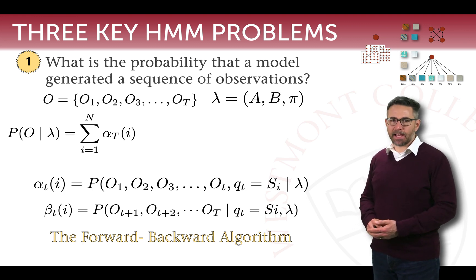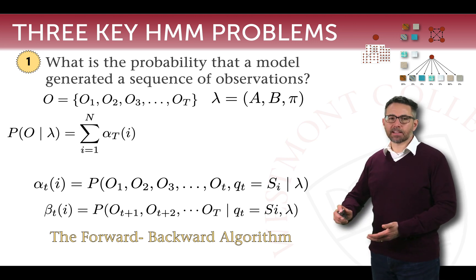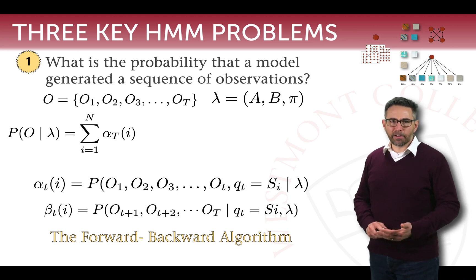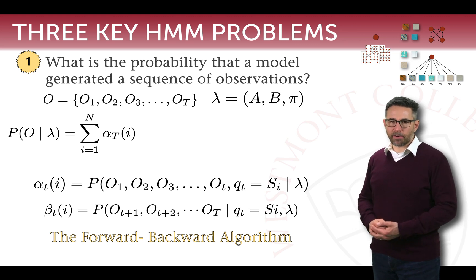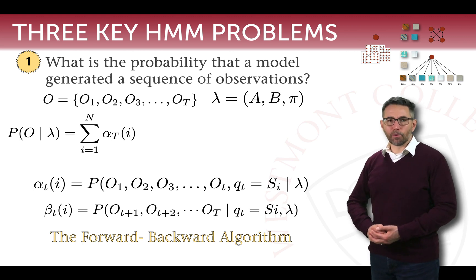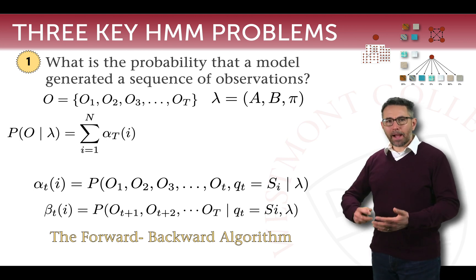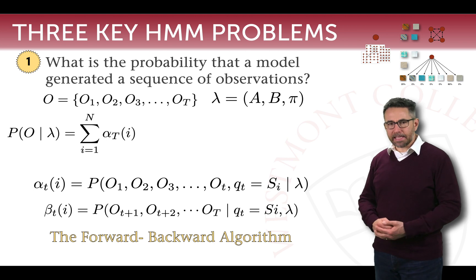This alpha term is called the forward term and the beta term is called the backward term. Either one of these could generate the probability of observations given lambda, but they formed the basis of the forward-backward algorithm, which was the first of the three key questions that can be asked about hidden Markov models.